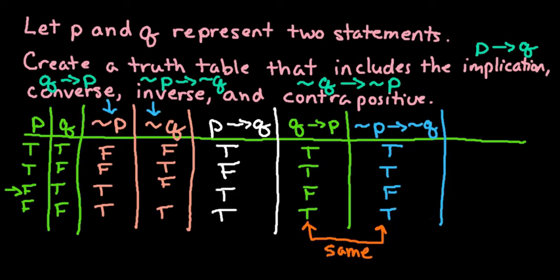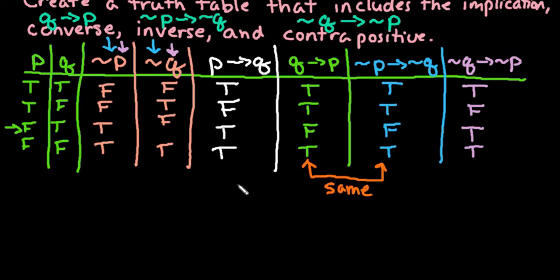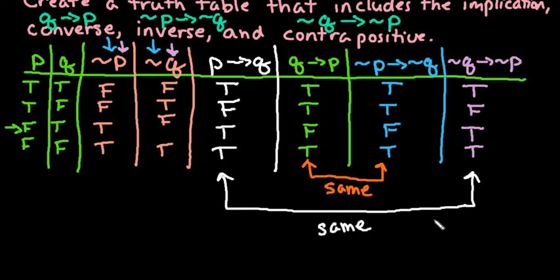For the last one, we are going to do the contrapositive, which is not Q followed by not P. So this time we want to look at not Q first, then not P. So false, false is going to be true. True, false, remember that's when it's false. If the if part is true followed by a false consequence, that's when it's false. False, true is true. And then the last one is true. And if you notice, these are the same. So the implication and the contrapositive will always be the same as far as truth values go.